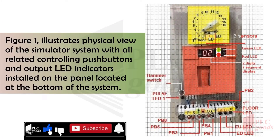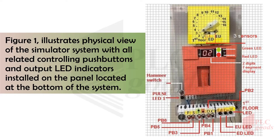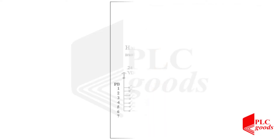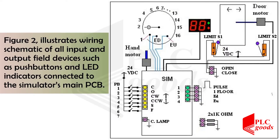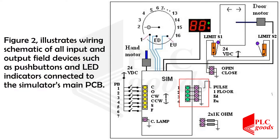Figure 1 illustrates a physical view of the simulator system with all related controlling push buttons and output LED indicators installed on the panel located at the bottom of the system. Figure 2 illustrates wiring schematics of all input and output field devices such as push buttons and LED indicators connected to the simulator's main PCB.